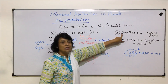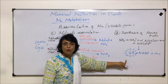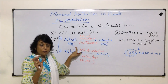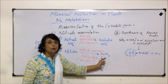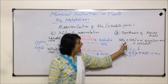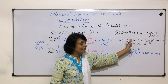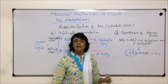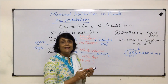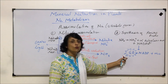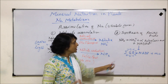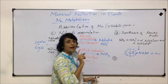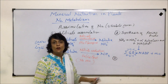So step two is synthesis of amino acid. Nitrogen got fixed, the fixed forms were converted into ammonia, then ammonia to ammonium ion, and ammonium ion is used to synthesize the amino acid. These amino acids are used to synthesize proteins. But there is one more step here, because only one amino acid got synthesized so far.